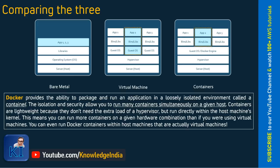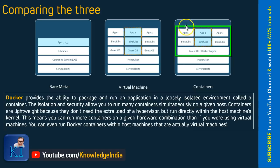All of this became possible with the help of Docker. Docker provides the ability to package and run an application in a loosely isolated environment called a container. The isolation and security allow you to run many containers simultaneously on a given host. In the context of AWS ECS, think of this as one virtual machine, one EC2 instance, and on that one EC2 instance you have like three containers running as per this diagram.